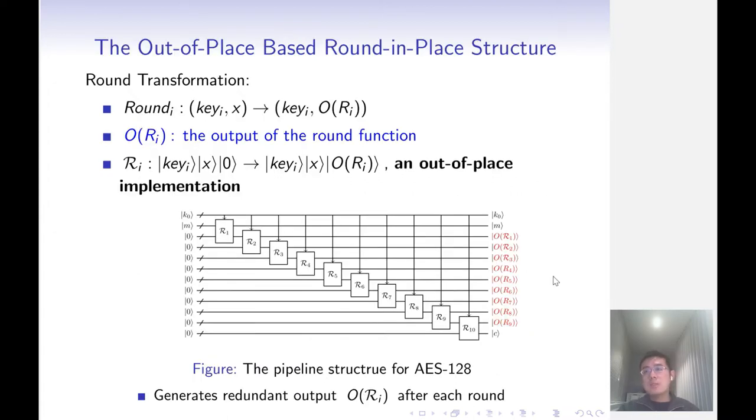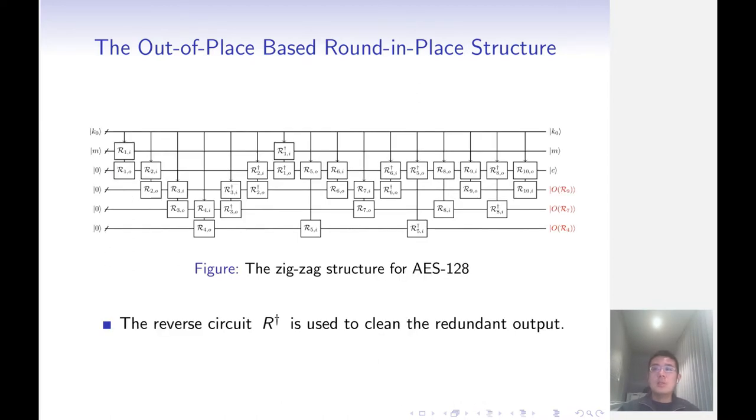Our first contribution is a new general structure for constructing the whole encryption circuit. In previous works, all structures use out-of-place circuits for round transformations as sub-circuits. Here, out-of-place means the output we need is stored in some different qubits than the input. Due to the use of this out-of-place circuit, these structures have some redundant outputs, and the width, which is the number of qubits, will increase when the number of rounds increases.